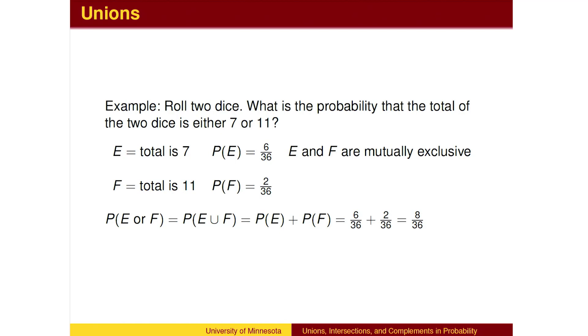Formally, the probability of E or F is the probability of E plus the probability of F.